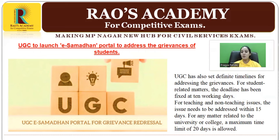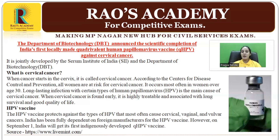The Department of Biotechnology announced the scientific completion of India's first indigenously made quadrivalent human papillomavirus vaccine against cervical cancer. When cancer starts in the cervix, it is called cervical cancer. According to the Center for Disease Control and Prevention, all women are at risk for cervical cancer, which occurs most often in women over age 30. Long-lasting infection with certain types of human papillomavirus is the main cause. When cervical cancer is found early, it is highly treatable and associated with long survival and good quality of life.